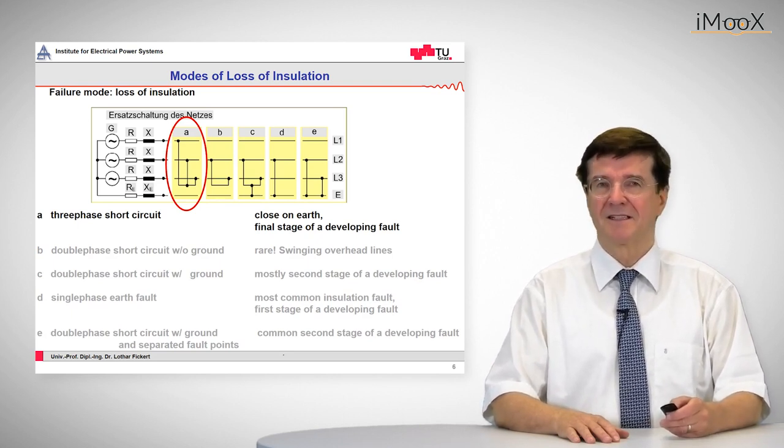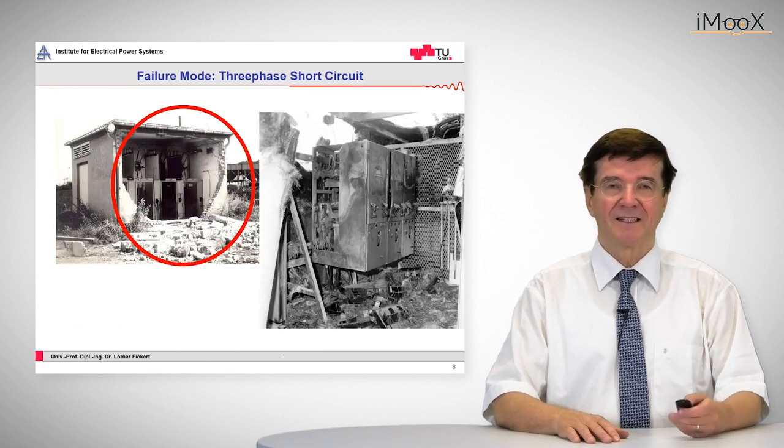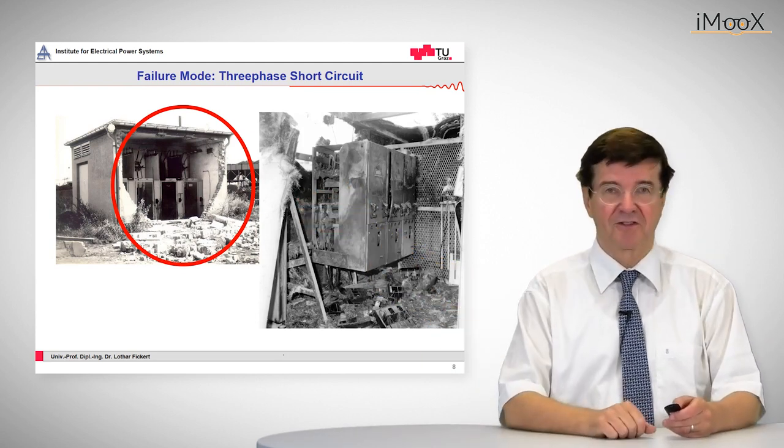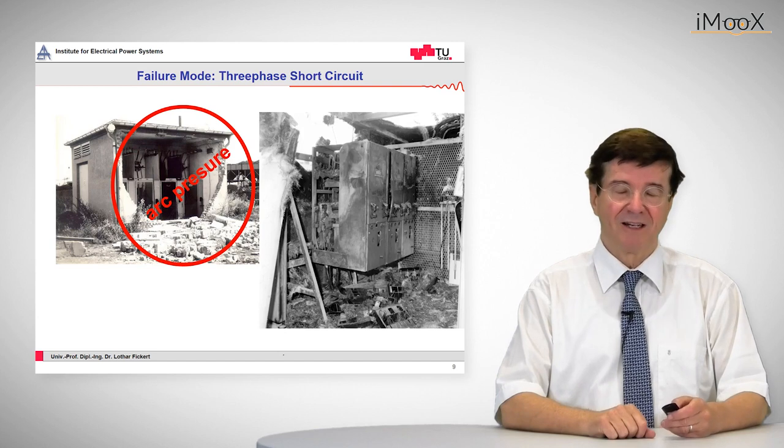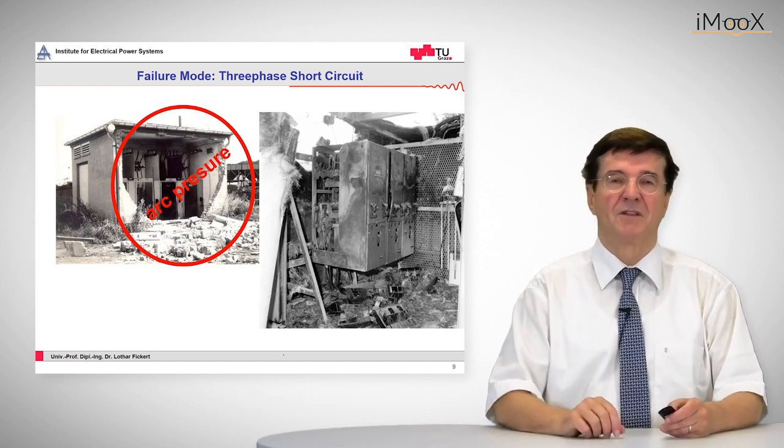First let's see some deplorable pictures of what happens. Let's see this building to our left side. The building has experienced a short circuit of some 20 kiloamps and the arc pressure has made the walls to explode and fall down.